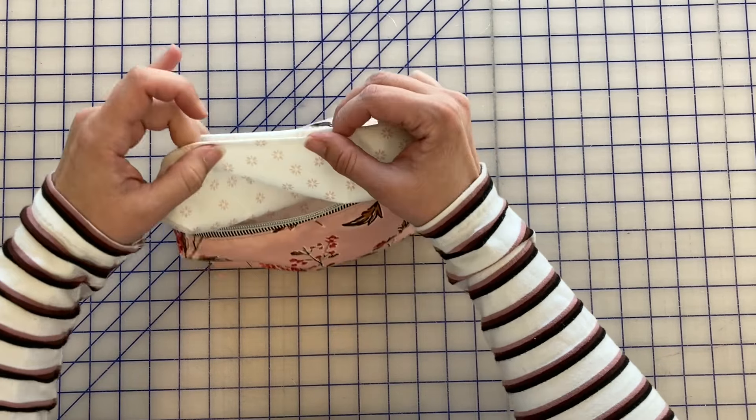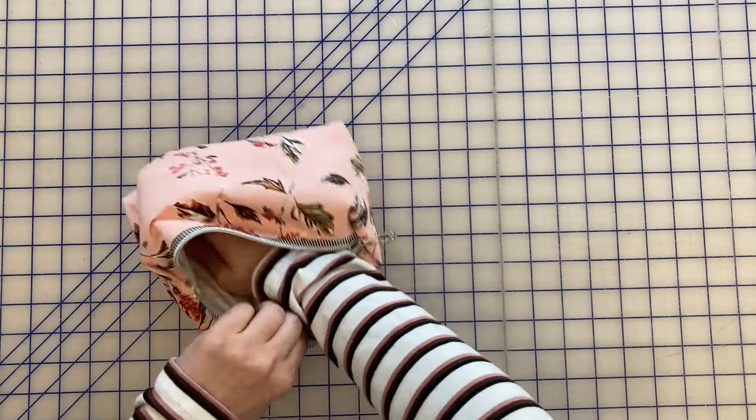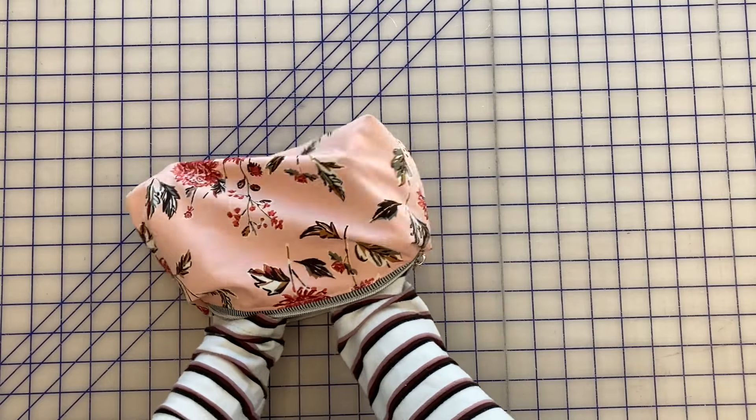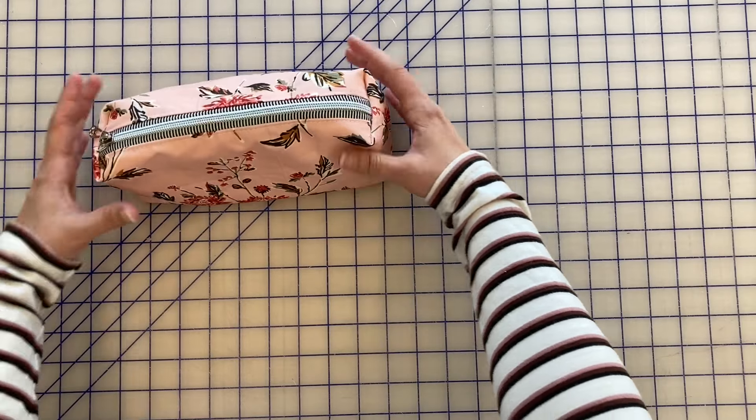Okay, you can see I've stitched across the opening there and I just tuck the lining back inside and there we go, we've got a little zipper pouch.